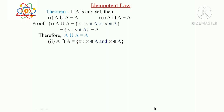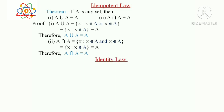Second, X element of A intersection B means X belongs to both A and B. Therefore, A intersection A equals {x : x ∈ A and x ∈ A} equals {x : x ∈ A} equals A. Therefore A intersection A equals A. This is the Identity law.